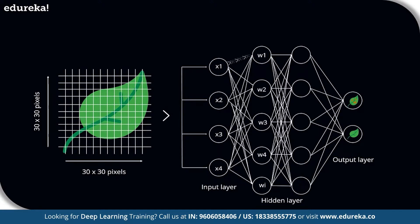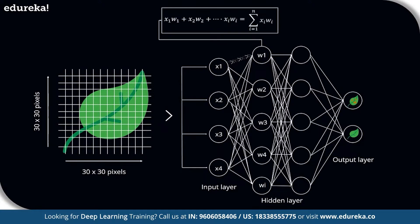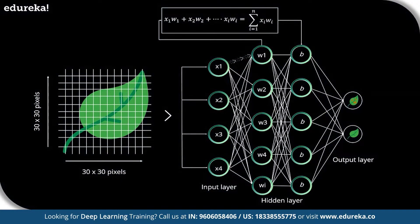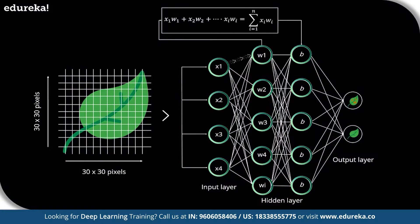Just like how our brains have neurons that help in building and connecting thoughts, an artificial neural network has perceptrons that accept inputs and process them by passing them from the input layer to the hidden and finally the output layer. As the input is passed from layer to layer, an initial random weight is assigned to each input. The inputs are then multiplied with their corresponding weights and their sum is further processed through the network. A numerical value called bias is also assigned to each perceptron.